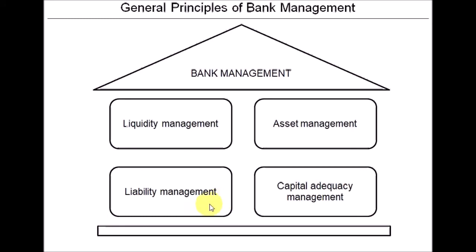Liability management — another word for liability in accounting is sources of funds — is about trying to obtain relatively cheap sources of funds to finance purchases of marketable securities or loans. Since the global financial crisis of 2008-2009, liability management is not that difficult for banks, since the Fed and central banks in other countries are always ready to provide loans to commercial banks at very low interest rates.